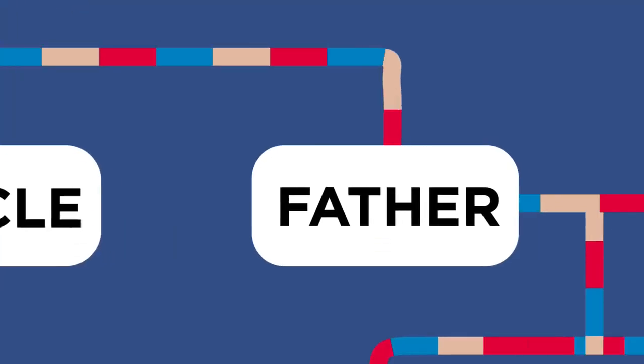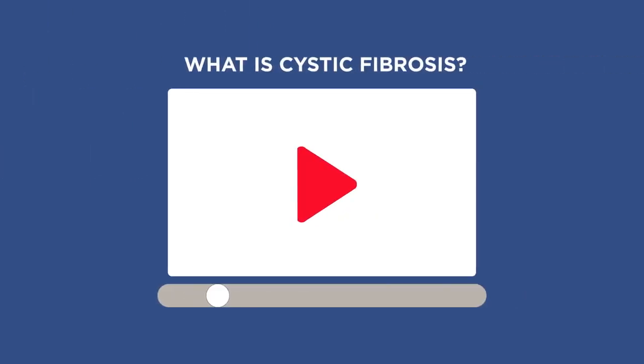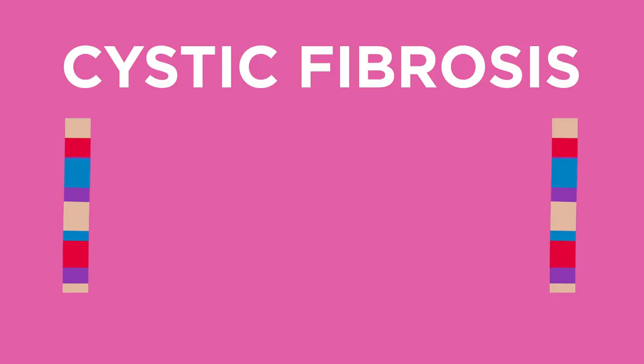Another example of an inherited disorder is cystic fibrosis. If you want to discover more about cystic fibrosis and how it affects the body, then watch this video. Cystic fibrosis is inherited in a different way to polydactyly.